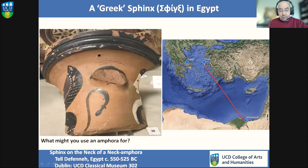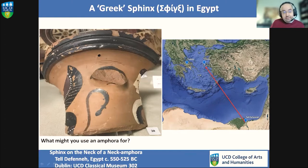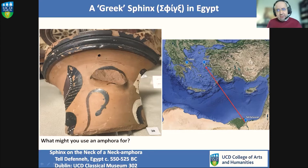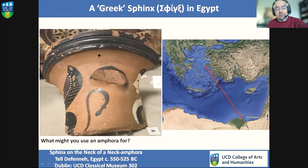This particular potsherd was discovered at a place called Tel Defenna in northern Egypt, somewhere in the Nile Delta. We know from the clay that it was manufactured in Turkey, but we also see painted on it a fragment of a Greek myth — you might be able to see the wing of a sphinx, and the lion's tail curling out at the bottom. In Egyptian thought, the sphinx is a combination of a lion's body and a pharaoh's head, but the Greeks took this creature and reinvented it as a monster — with the head of a woman, the body of a lion, and the wings of an eagle.